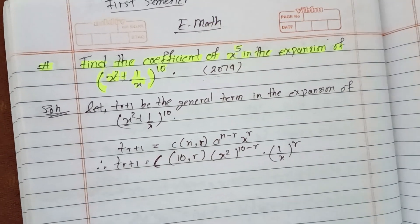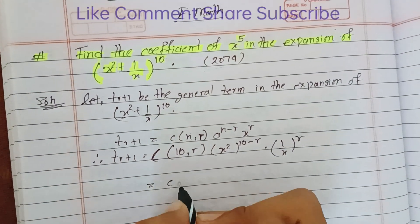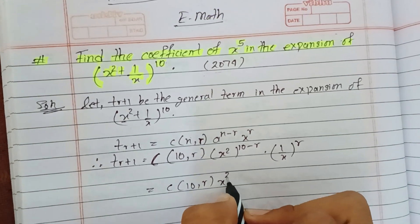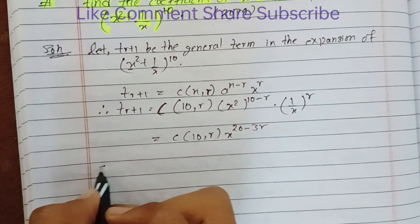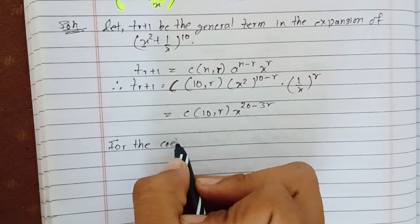This simplifies to C(10,r) times x^(20-3r).